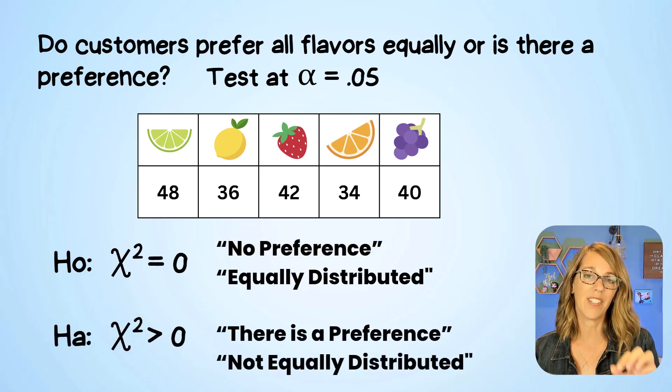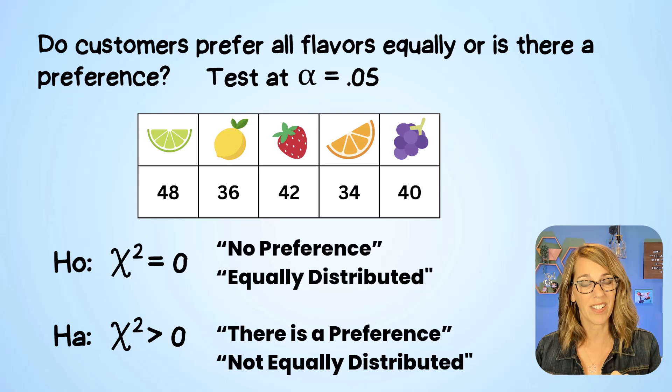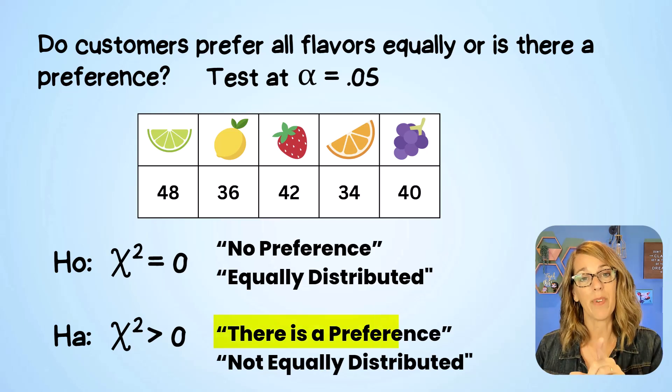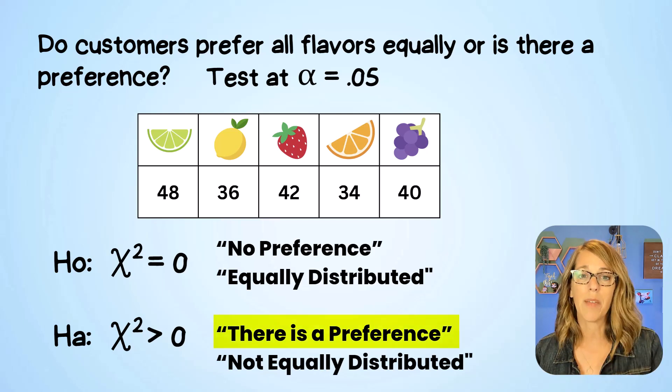The alternative hypothesis says that chi-square is significantly greater than zero, meaning that there is a preference that our customers are showing, the numbers in our table that are not evenly distributed.